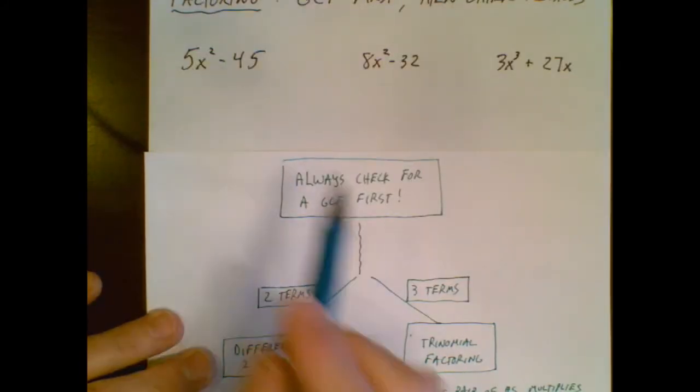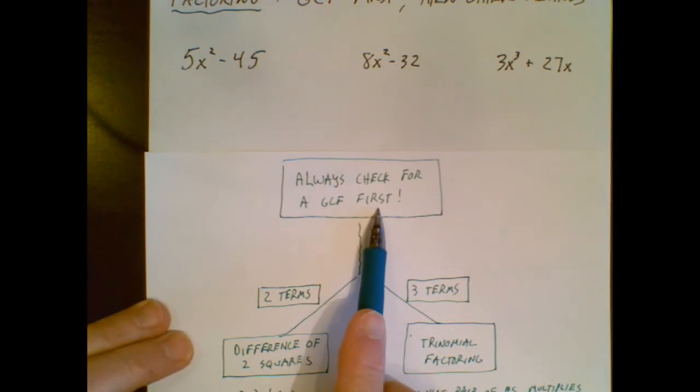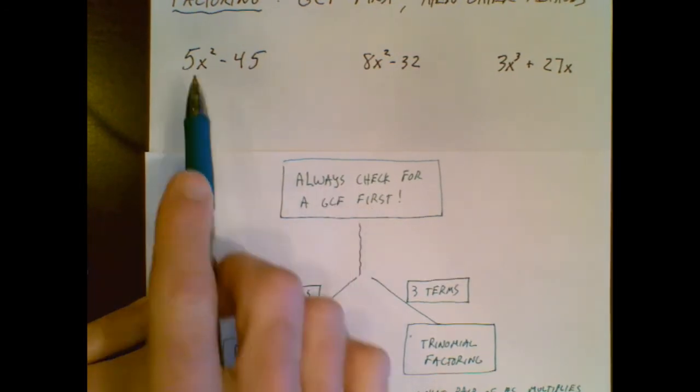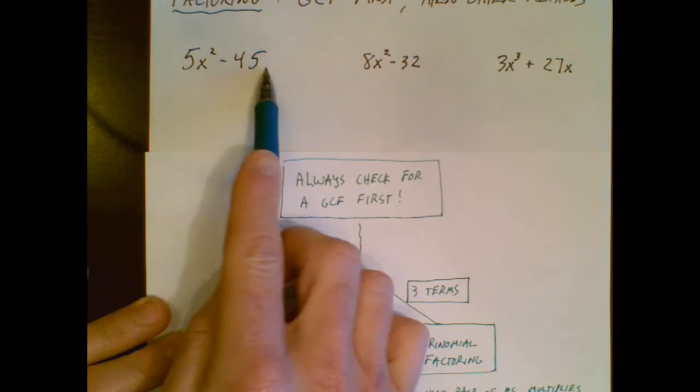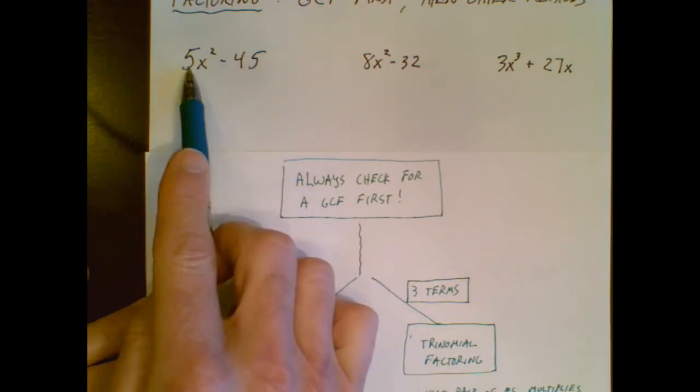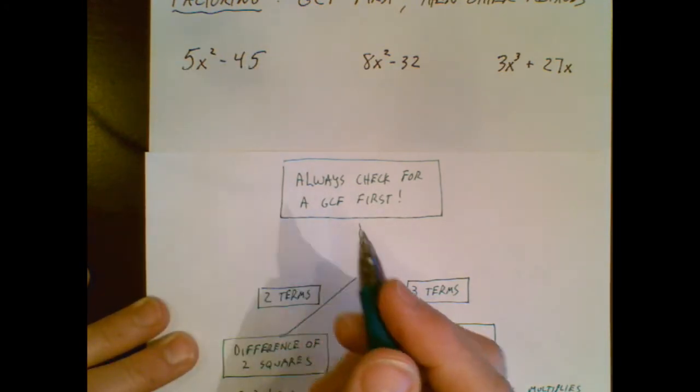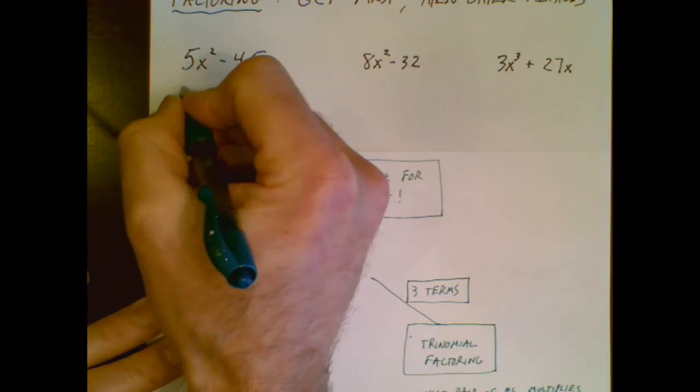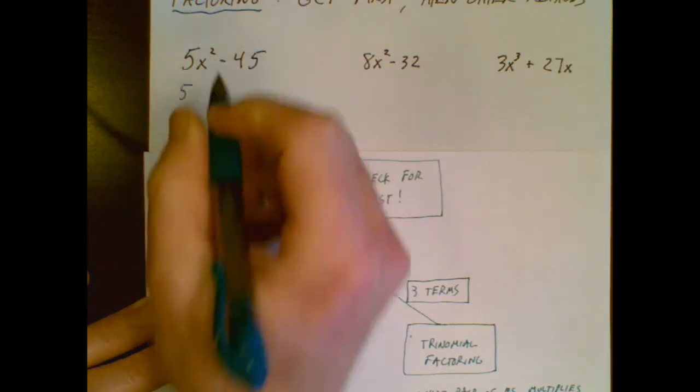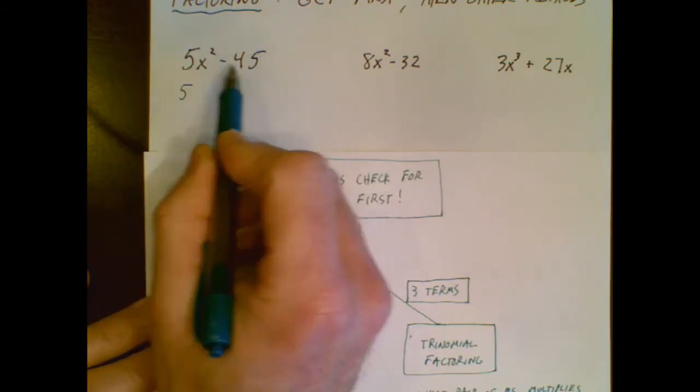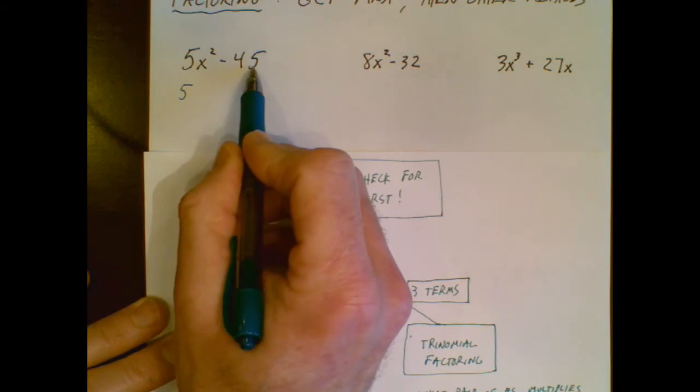So we'll start off with this one. The flowchart says always check for GCF first. So do I see a greatest common factor? They don't share common variables. But there is a number that will divide evenly into 5 and 45. And I want to choose the largest number that would do that. In this case, the GCF is 5.